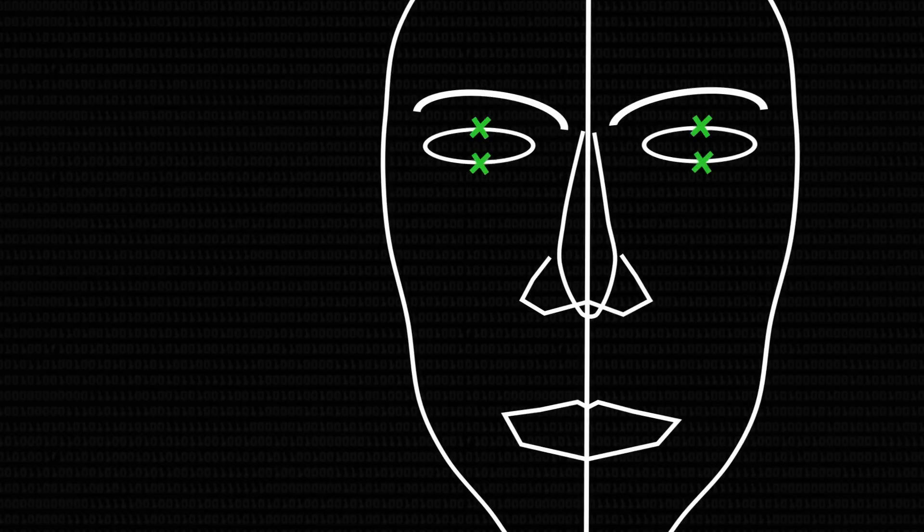One way of detecting a facial expression automatically is by using what we call geometric features. These are features that look at the shape of a face — for instance, the shape of your mouth or the distance between your eyelids. When I blink, the distance between my two eyelids goes lower and lower until it's zero, then goes up again when my eyes open. It's a very straightforward, direct relation between the feature — the distance between two facial points — and the expression, whether I'm blinking or not.